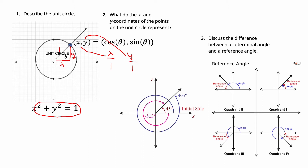Discuss the difference between coterminal angles and reference angles. Coterminal angles and reference angles, in a sense, sit in the same spot, but coterminal means how many rotations you are going forward or backward — positive or negative, clockwise or counterclockwise. So positive rotation: if I go to 45 degrees, I could go all the way around and get to 405 degrees — that's the same spot. Or going backwards gives the same spot too. As long as the terminal angle is in the same spot, all these angles are coterminal.